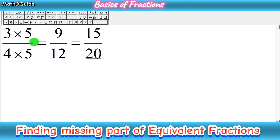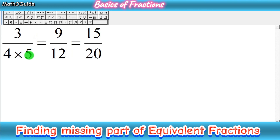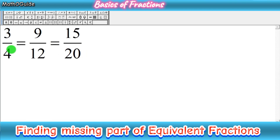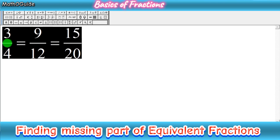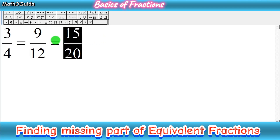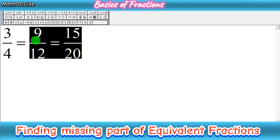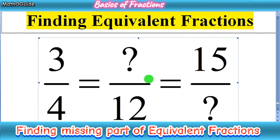This is the basic method to find the missing equivalent fraction. Remove the multiplication factors and you get the answer: 3 over 4 equals 9 over 12 equals 15 over 20. These are the 3 equivalent fractions. When you simplify the second and third fractions, you will get 3 over 4. I hope this was helpful — thanks for watching and don't forget to subscribe to my channel.